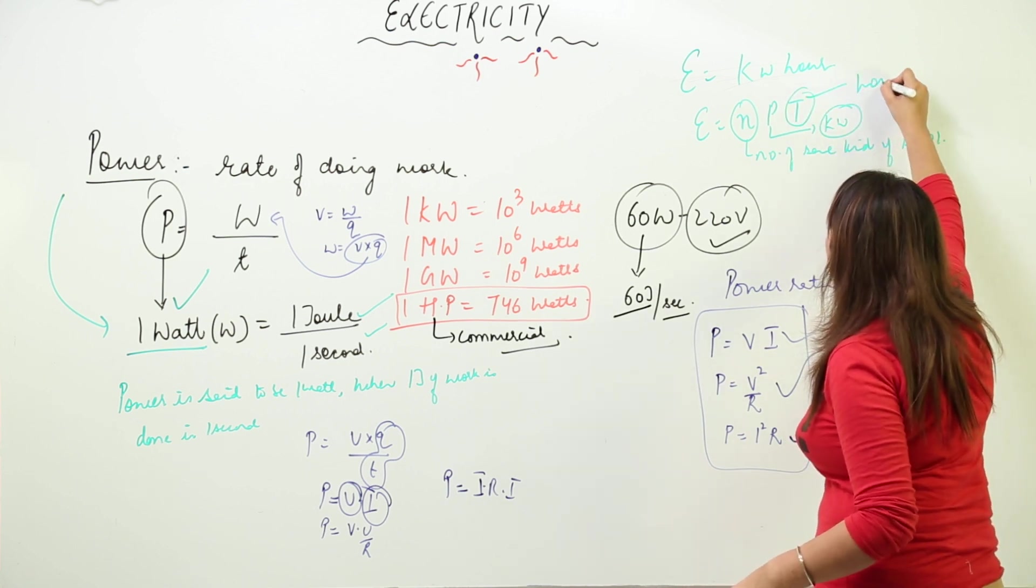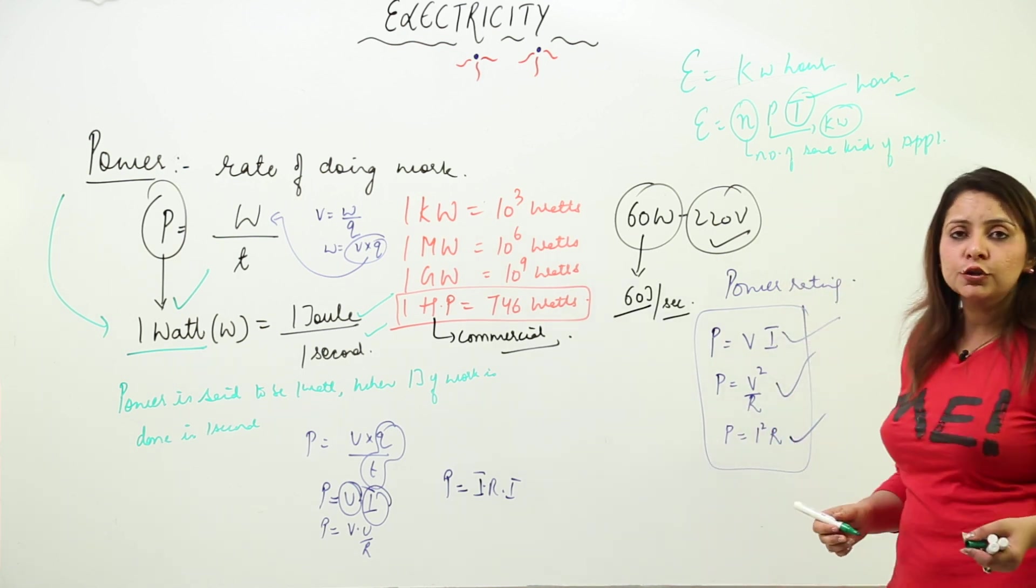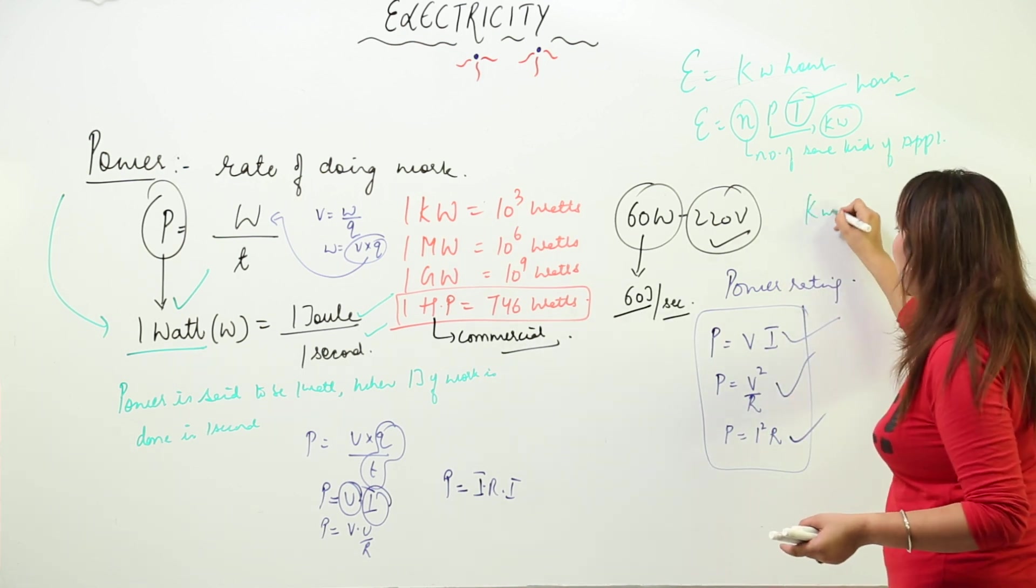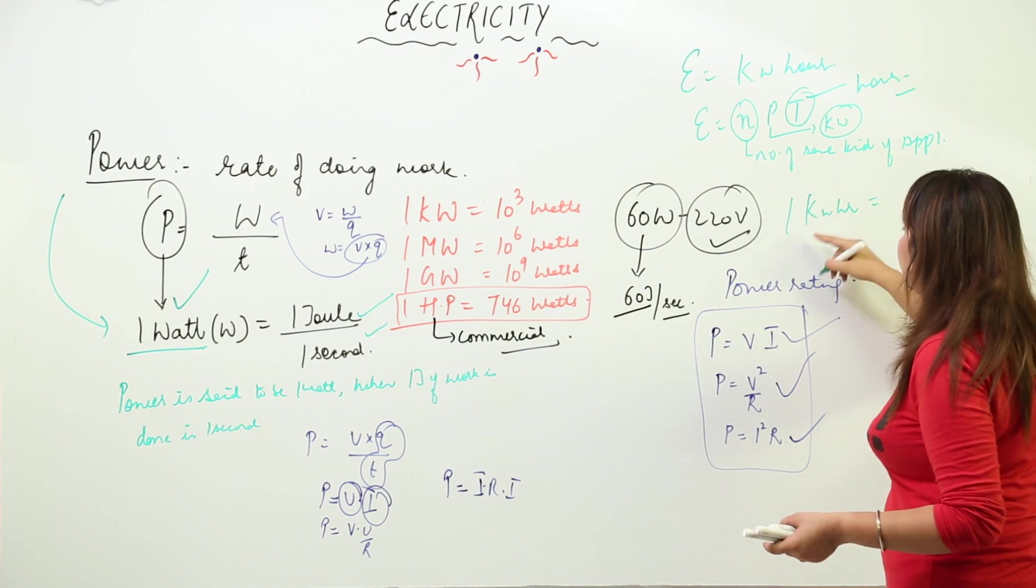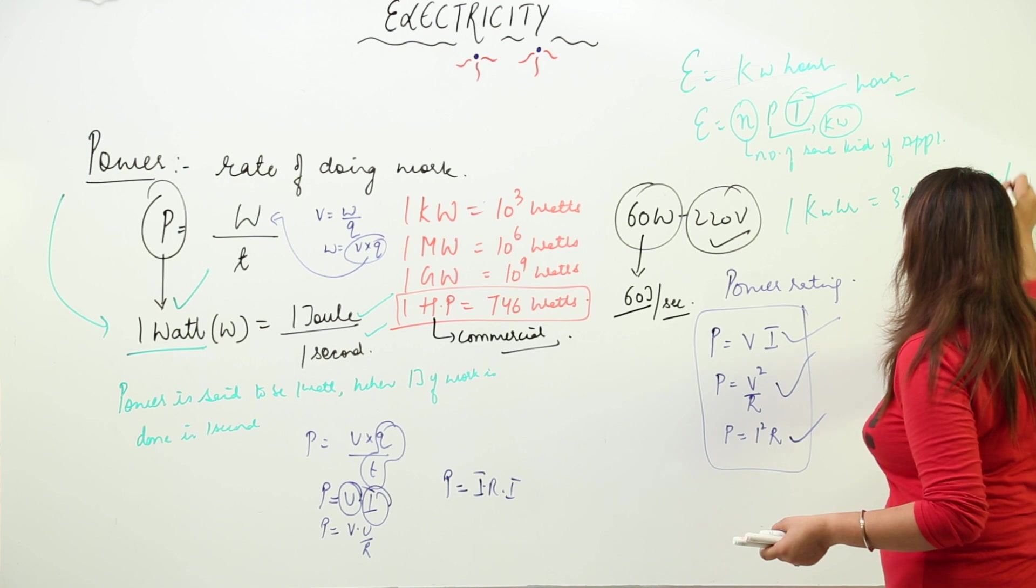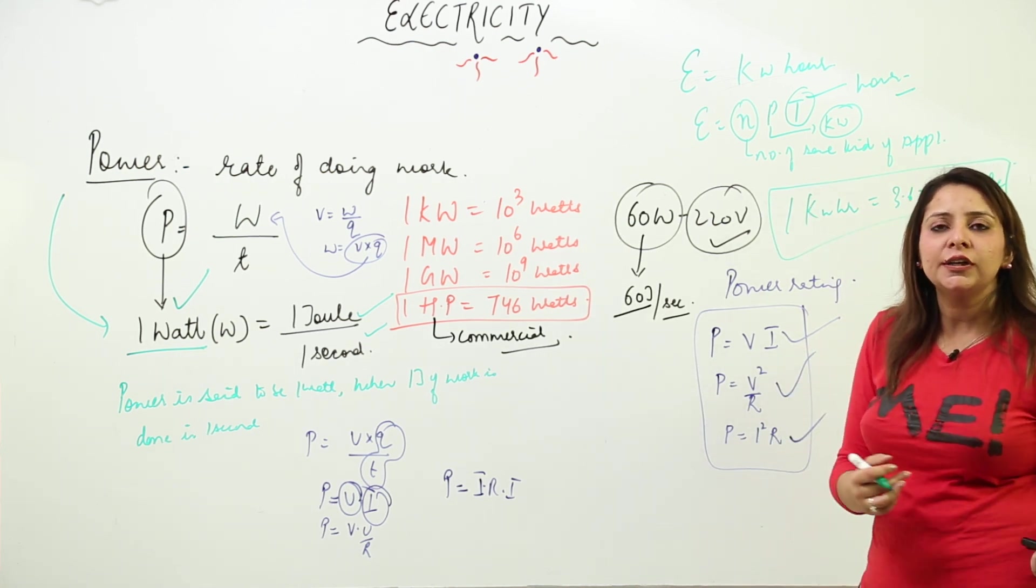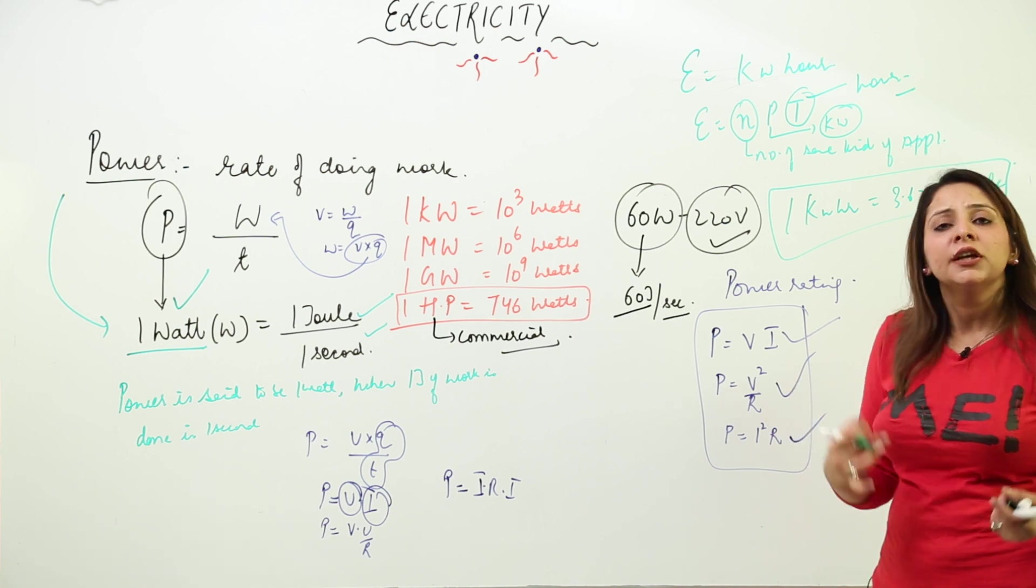There's a relation between kilowatt-hour and joule: 1 kilowatt-hour equals 3.6 × 10⁶ joules. This formula allows you to interconvert between kilowatt-hour and joule.